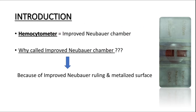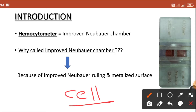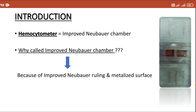You might have a question: why is it called the improved Neubauer chamber? What is the improvement compared to the ordinary Neubauer chamber? In this instrument, you have improved Neubauer ruling and a metalized surface. Because of the improved metalized surface, it makes the background ruling and the cells easily visible.